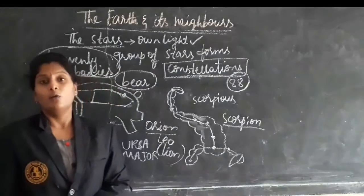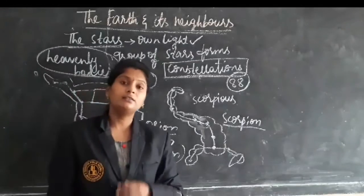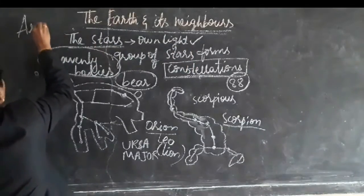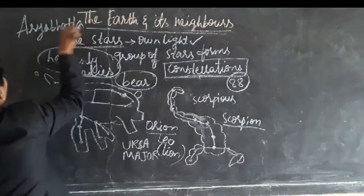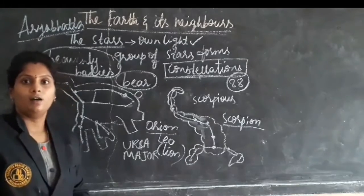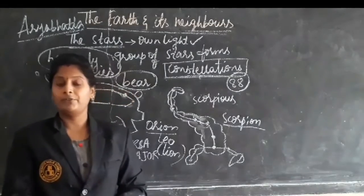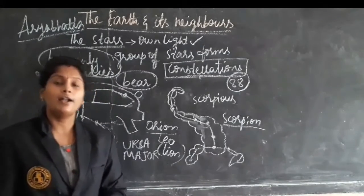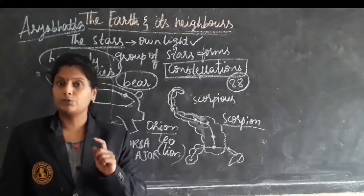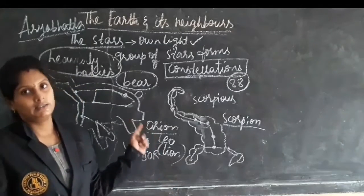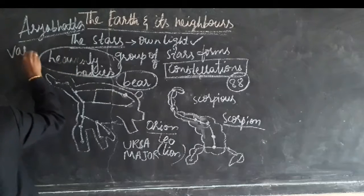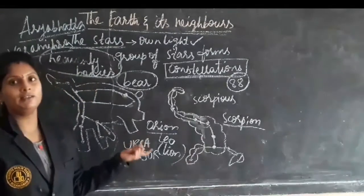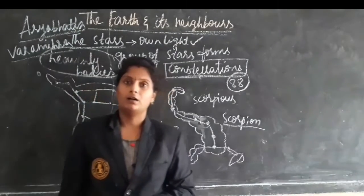Next we are going to discuss about astronomers. In India, there was a famous astronomer known as Aryabhatta. He was the person who said that earth is spherical in shape, that earth is revolving around the sun, and that planets do not have their own light but take the light of the sun. There is also Varahamihira, an astronomer who also wrote many books.